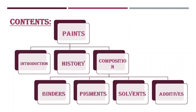Let's come towards the contents. First of all, we will discuss the introduction of paints, then history and composition of paints. The composition includes binders, pigments, solvents, and additives.